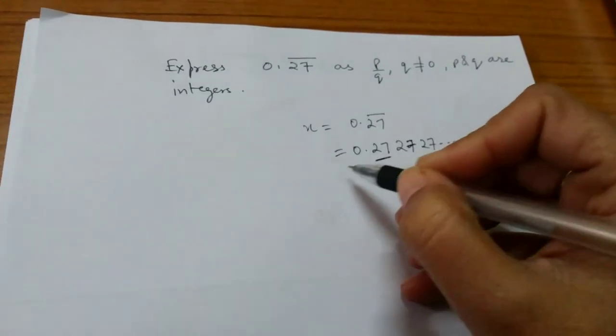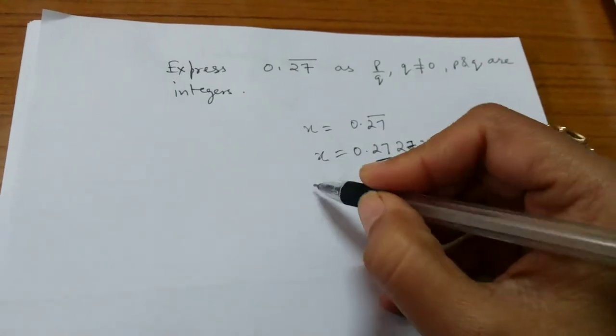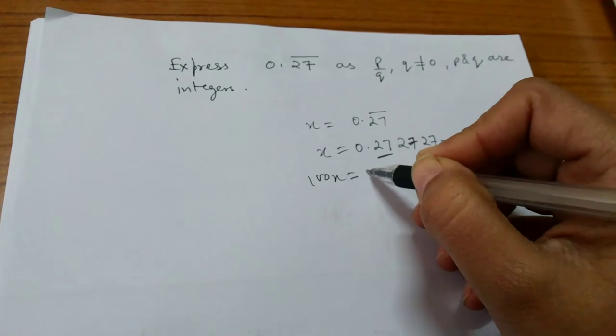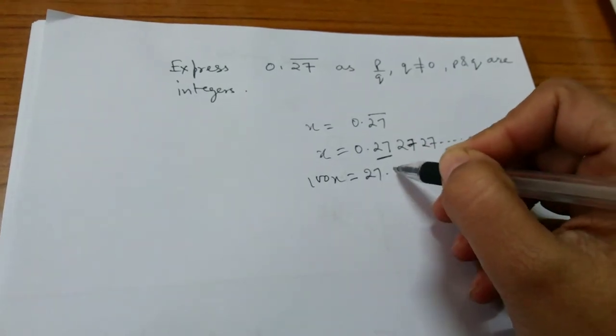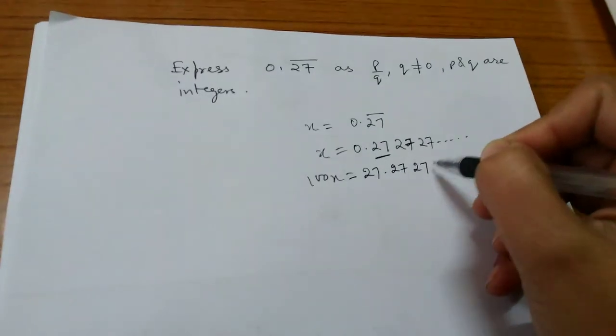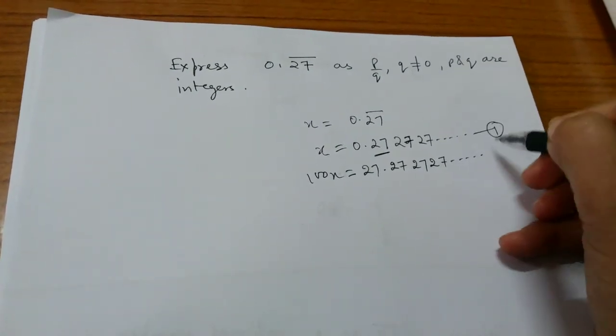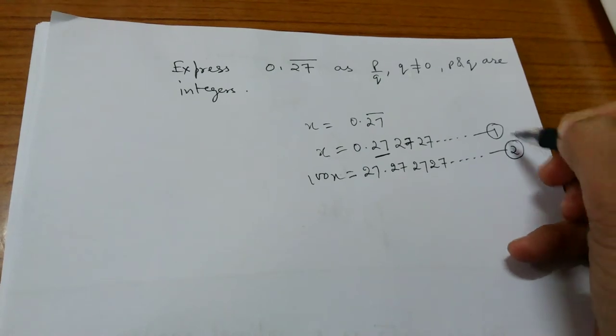We multiply both sides by 100. We get 100x is equal to 27.272727 and so on. Number them as 1 and 2.